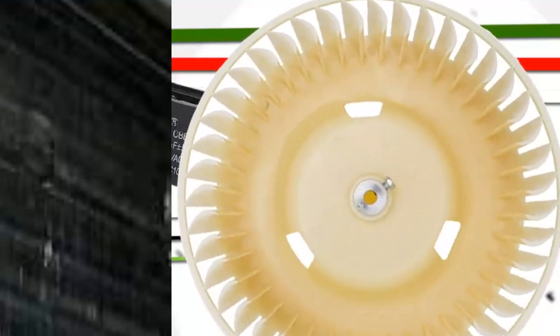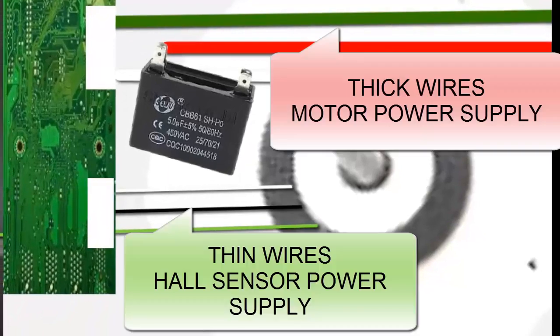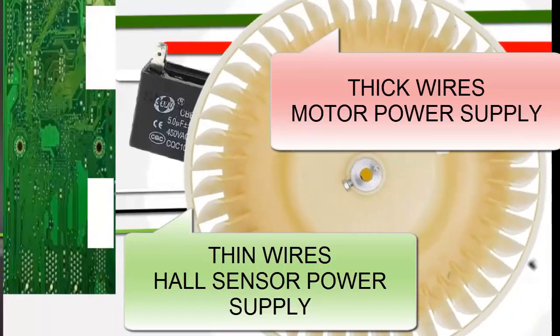We will focus on the 6-wire fan, composed of 2 pairs of connections, 3 thin cables, and 3 thick ones. These fans operate with a Hall effect sensor and do not require a relay.